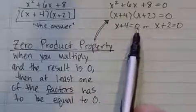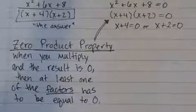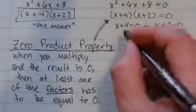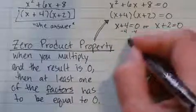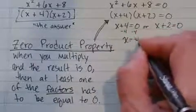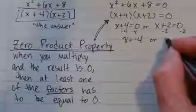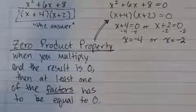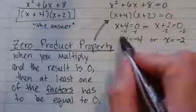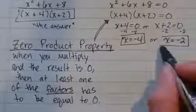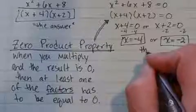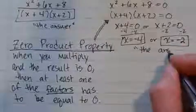Two things times each other equals zero means that one of the two things or the other of the two things has to equal zero. So I get x plus 4 equals zero or x plus 2 equals zero. Well, I can solve those equations, minus 4, minus 4. That gives me x equals negative 4 or minus 2, minus 2, x equals negative 2. And in this case, when I'm asked to solve that quadratic equation, this is the answer.